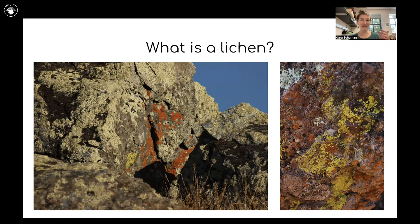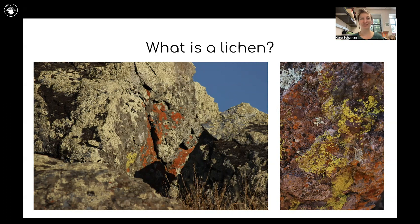As you can see in these photographs, these are different rocks in California. We have quite a few different colorful splotches on these rocks, and each of those different colors is a different lichen.